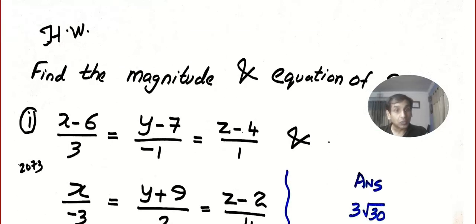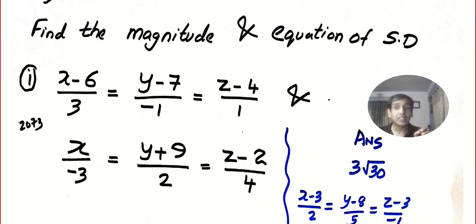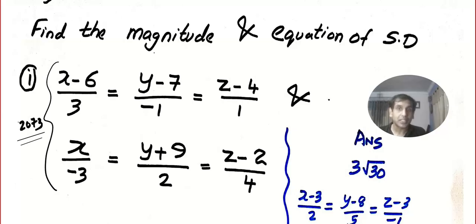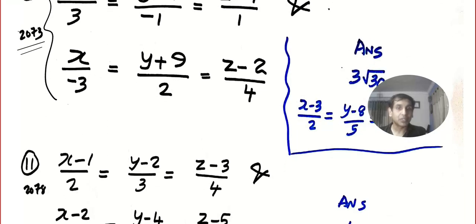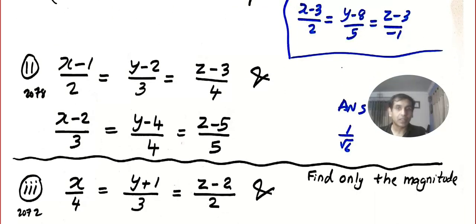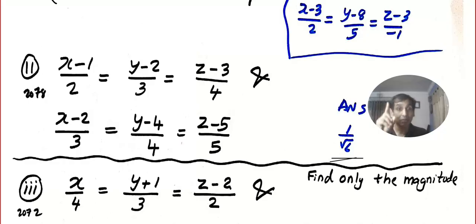Practice a lot of questions — I found this type in many past papers. Try this question which asks for both the magnitude and equation of the shortest distance. I found only the magnitude here, so you can use the first (long) method to also find the equation.